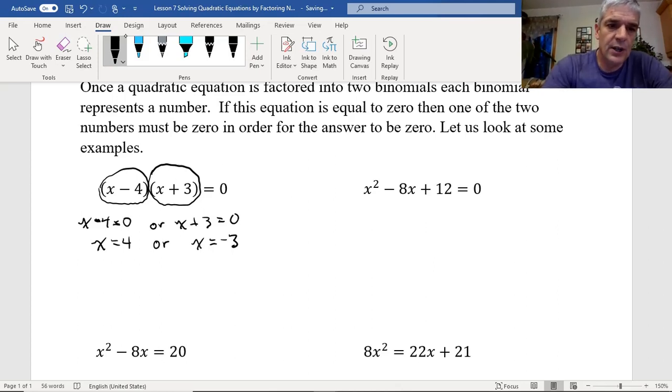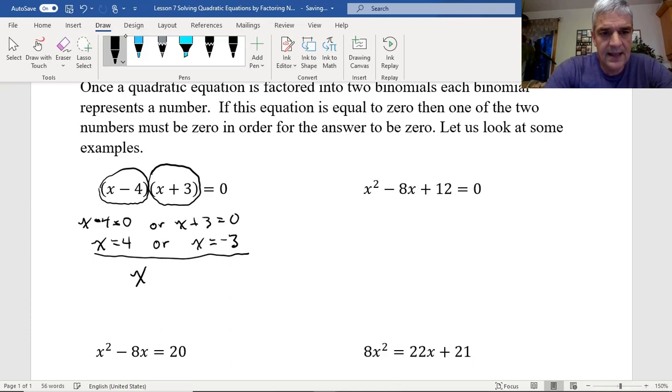Now, quite often, you can write the answers like this in this format and say x equals 4 or x equals minus 3. But quite often, we write them like this as mathematicians. We write x equals 4 and then put a comma for minus 3 instead of writing or and writing x equals again. So it's just about saving a little writing.